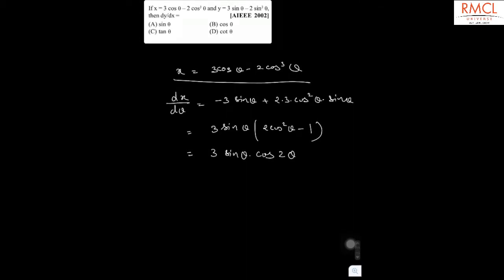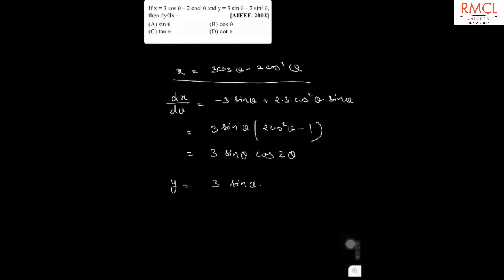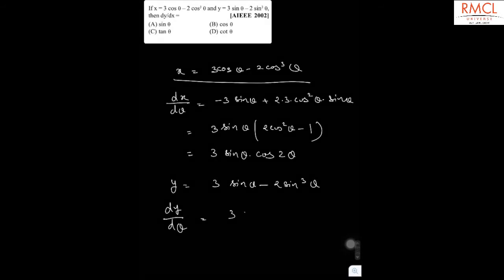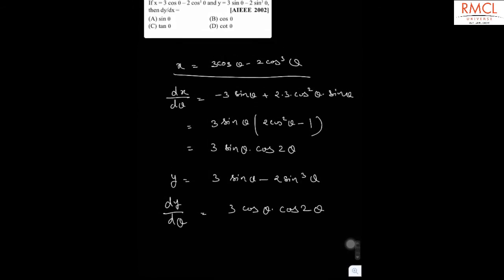Similarly, y is given as 3 sin theta minus 2 sin cube theta. So dy by d theta will be 3 cos theta cos 2 theta.